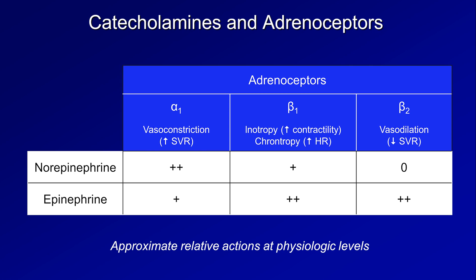This might seem counter to clinical experience treating shock or anaphylaxis with epinephrine — it almost always increases blood pressure, sometimes dramatically. But that's because pharmacologic doses far exceed normal physiologic levels. When epi's concentration is raised to supranormal levels, its action on alpha-1 receptors becomes more prominent. This is just one example of the dose dependency of receptor selectivity — one factor contributing to the complexity of blood pressure control, with multiple compounds having dose-dependent effects across multiple receptors.